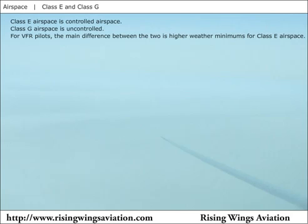Class E airspace is controlled airspace; however, there is no requirement to call air traffic control or obtain a clearance to enter Class E under visual flight rules. For VFR flight, the main difference between Class E and Class G airspace, which is uncontrolled, are higher visibility and cloud clearance requirements for VFR flight into Class E. For this reason, Class E airspace is often referred to by VFR pilots as weather controlled airspace.